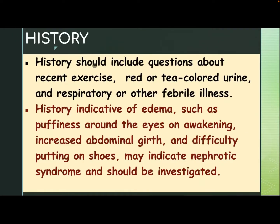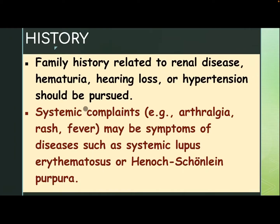The history should include questions about recent exercise, red or tea-colored urine, and respiratory or other febrile illnesses. History indicative of edema, such as puffiness around the eyes, increasing abdominal girth, and difficulty putting on shoes, may indicate nephrotic syndrome and should be investigated. Family history related to renal disease, hematuria, hearing loss, or hypertension should also be pursued.